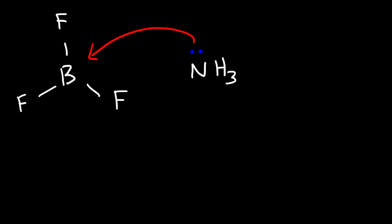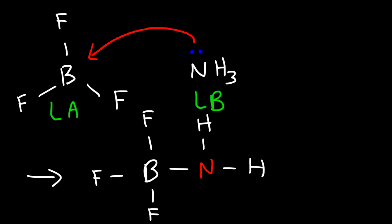Whenever you draw the curved arrows, it's always going to go from the Lewis base to the Lewis acid. The product of this reaction is going to look something like this. A covalent bond is produced. Nitrogen is going to have a positive formal charge and boron is going to have a negative formal charge. That's the typical Lewis acid Lewis base reaction.